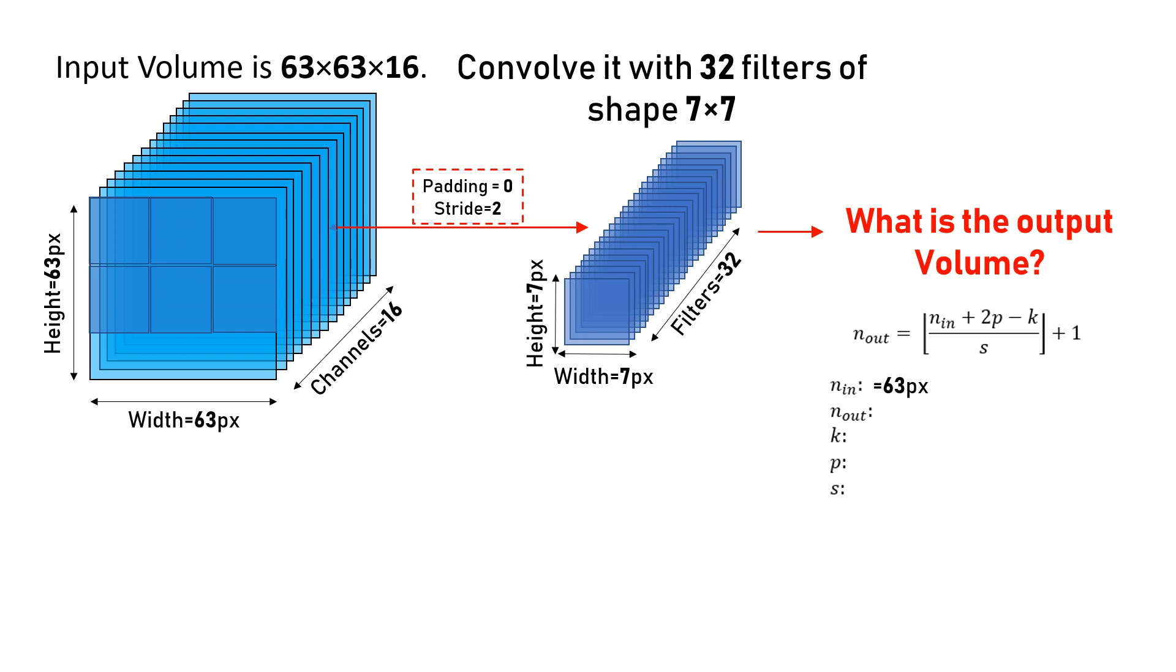Let's put the values. Input size is 63. We don't know the output dimensions yet - we will calculate it. Filter size is 7, padding is 0 pixels, stride is 2 pixels from the description.